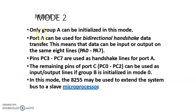Mode 2 operation: only Port A can be initialized in this mode. It can be used as a bi-directional handshake — that is, strobed input or output port — meaning data can be input or output on the same eight lines PA0 to PA7. Pins PC3 to PC7 are used to strobe Port A or to verify Port A. The remaining pins PC0 to PC2 can be used as input or output port lines if Group B is initialized in mode 0.